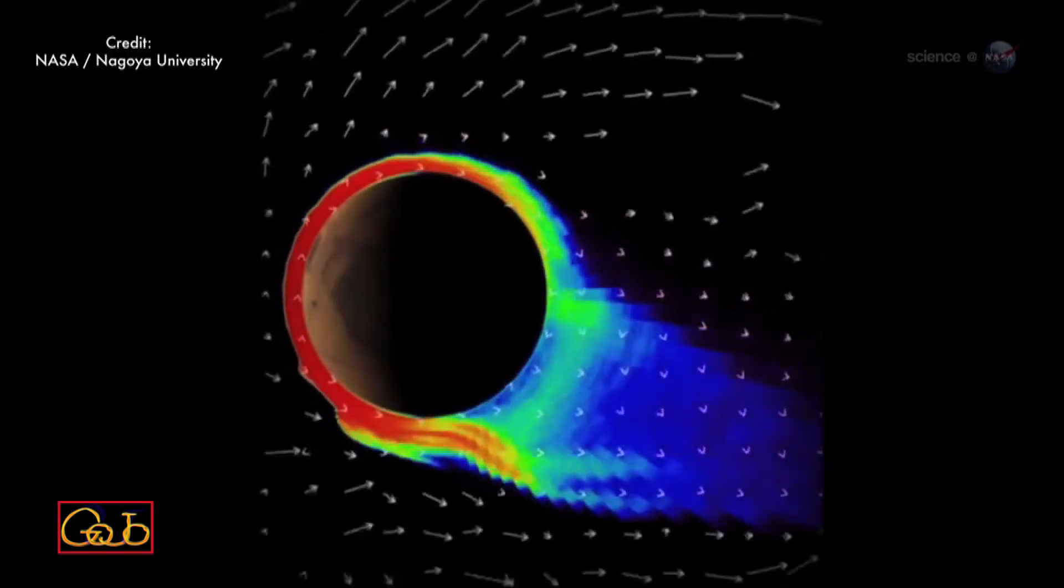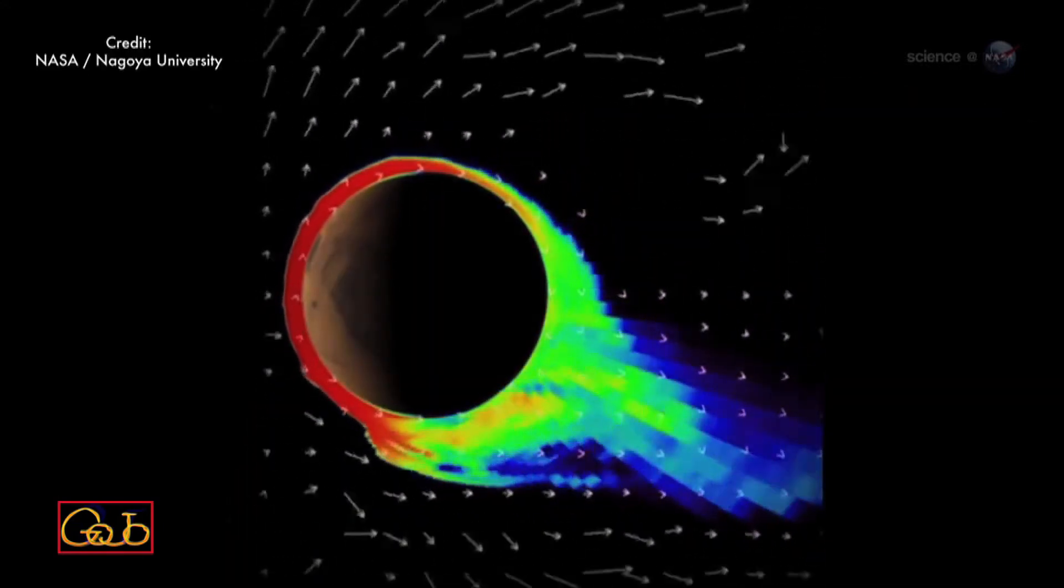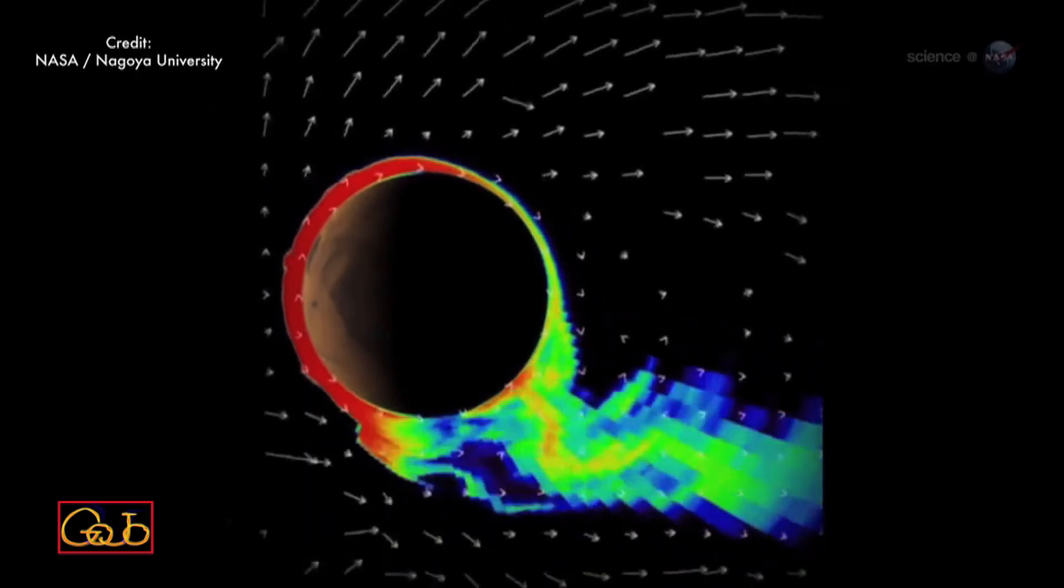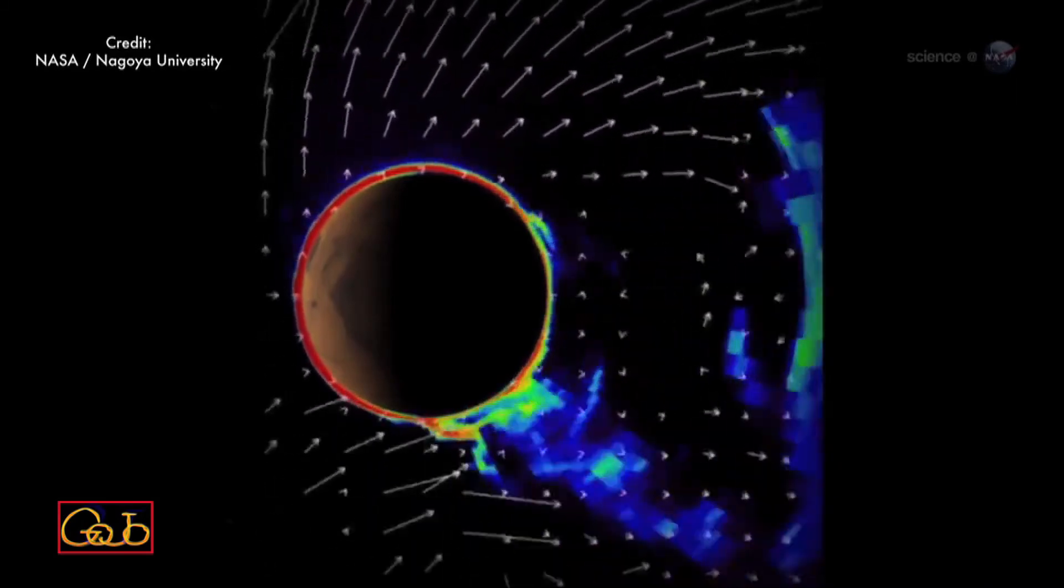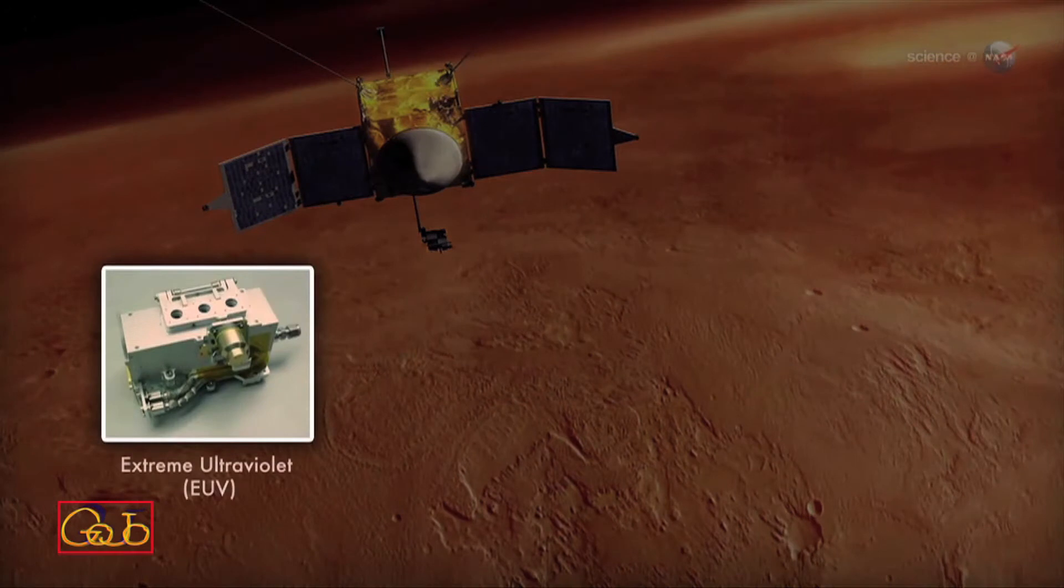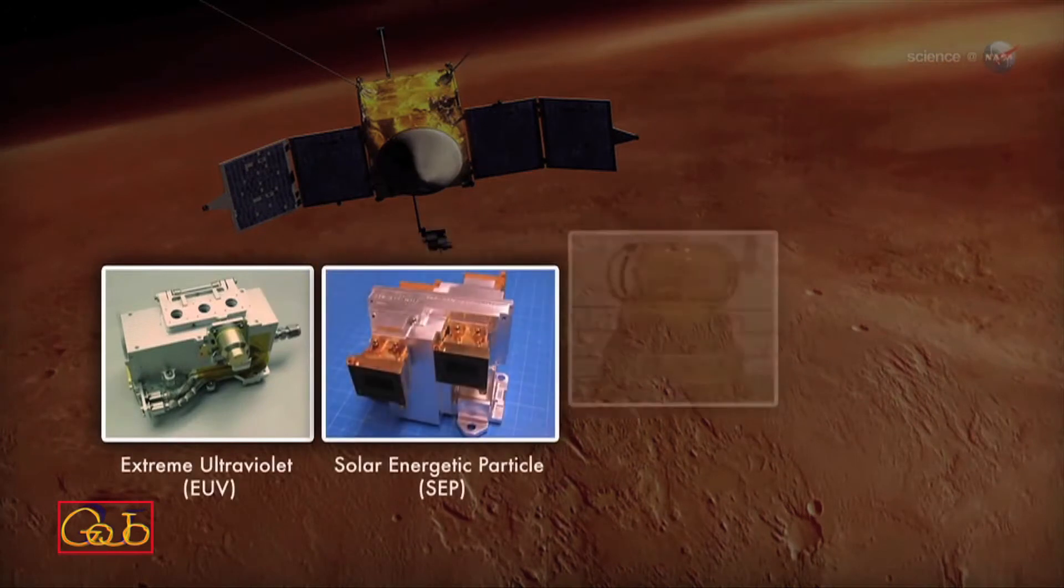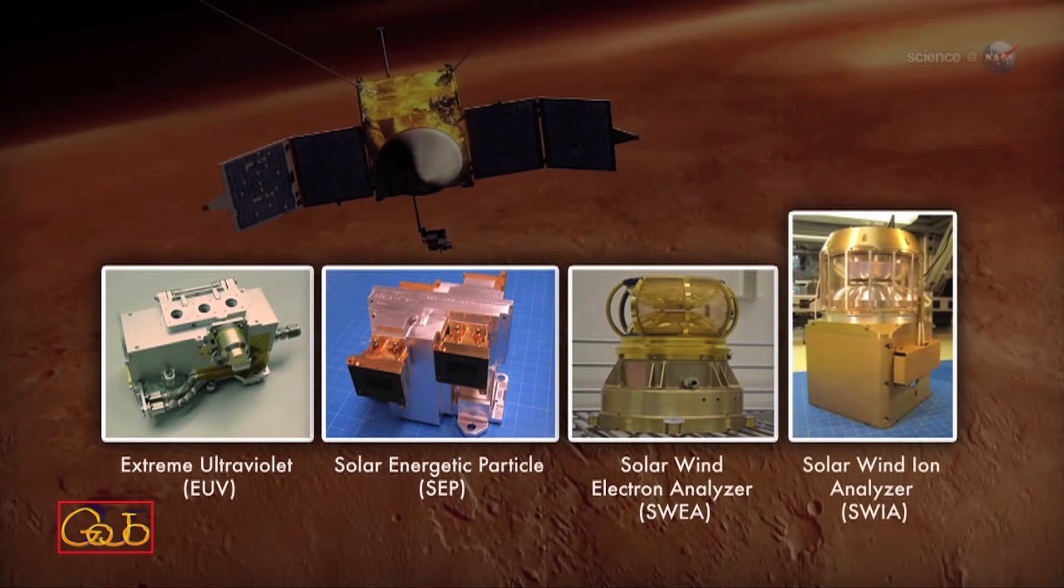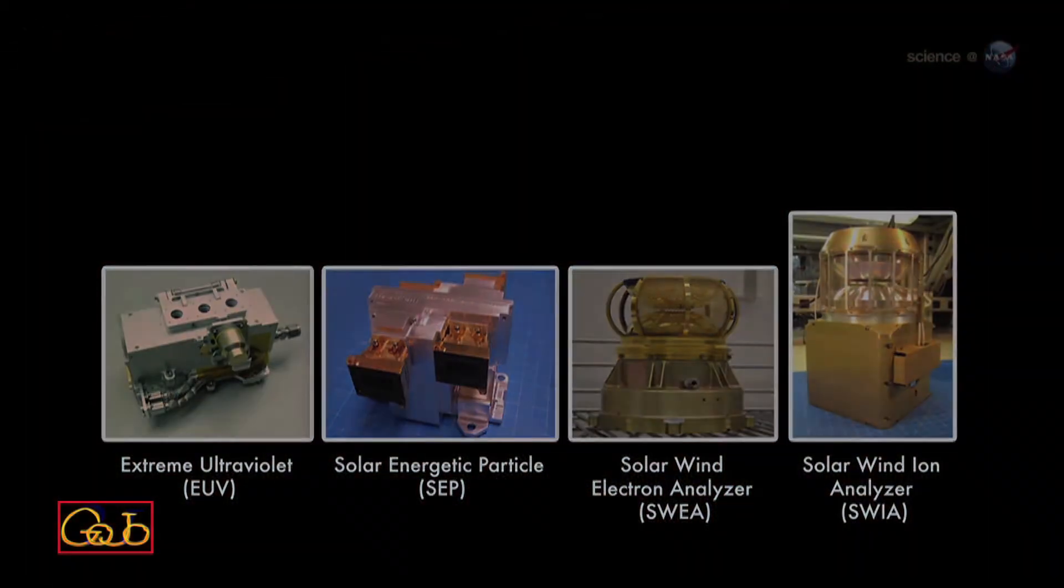MAVEN's instruments will track ions and molecules in this broad cross-section of the Martian atmosphere, thoroughly documenting the flow of CO2 and other molecules into space for the first time. MAVEN's instruments also will measure the solar energetic inputs into the Martian upper atmosphere and the atmospheric response. This will allow us to determine the processes that are responsible for that loss to space.